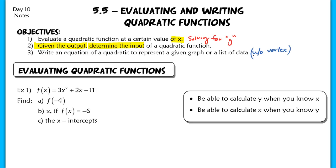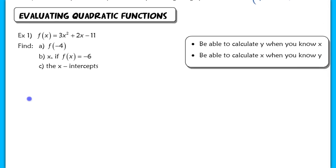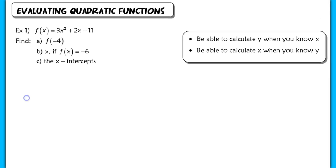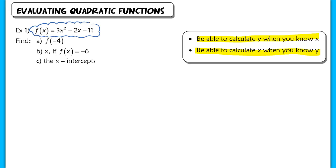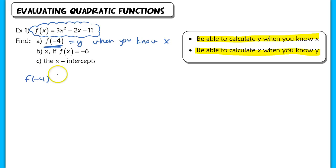Let's start with objectives 1 and 2 for evaluating quadratic functions. The main thing here is we want you to calculate y when you know x, or calculate x when you know y — two very important skills for this chapter. So let's start with the first question, which uses the function f(x) = 3x² + 2x − 11. Finding f(−4) is basically calculating the y value when you know x. In other words, f(−4) means x equals −4, and you just plug that in.